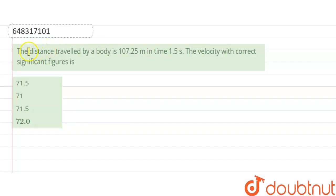Hello friends, our question is the distance travelled by a body is 107.25 metre in time 1.5 seconds. Velocity with correct significant figures is.